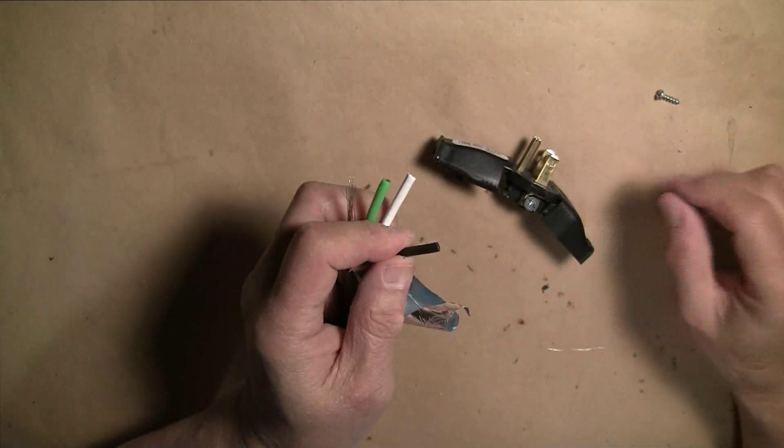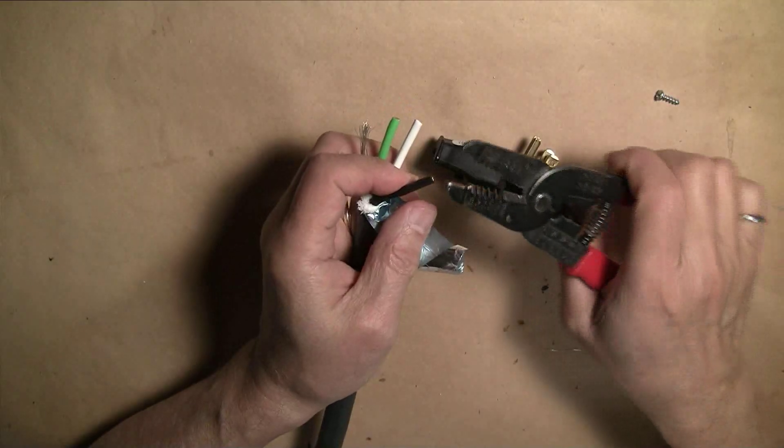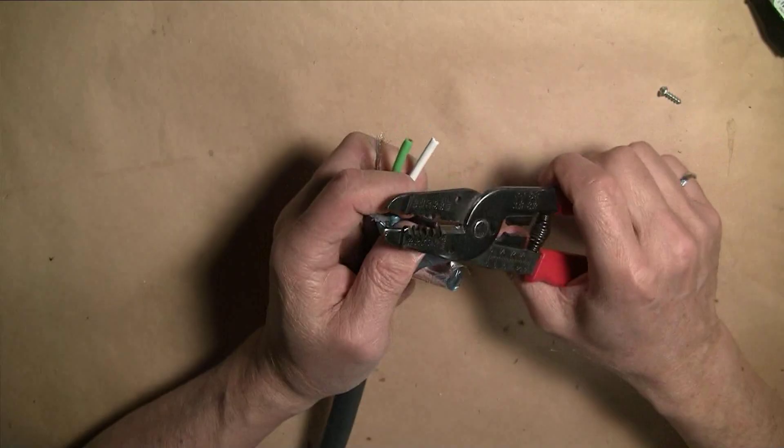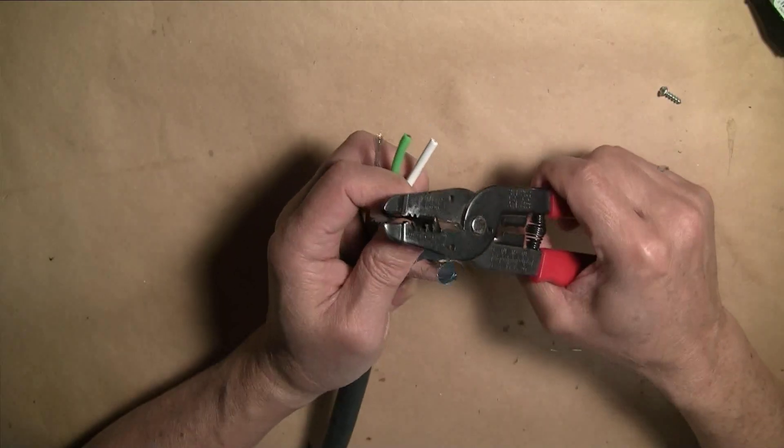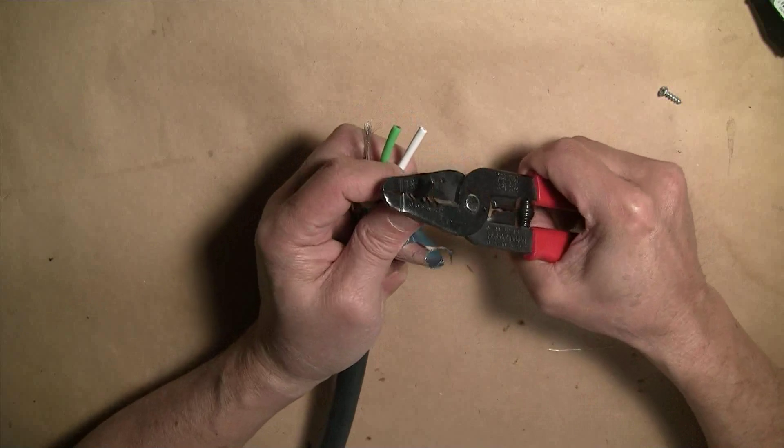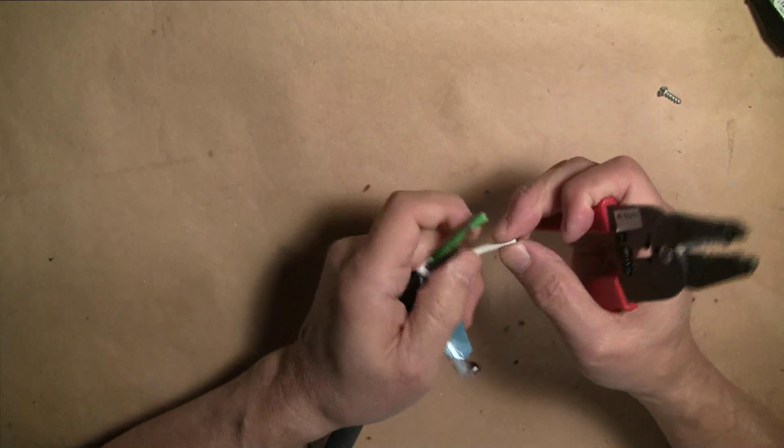I am going to strip about a half inch of insulation from each of the conductors. It should be 14 gauge so if I use my 14 gauge size, it should be perfect. I am going to strip about a half inch of insulation, it should be perfect, and it is.